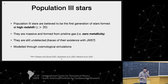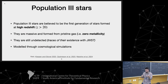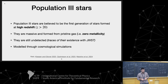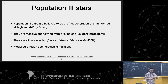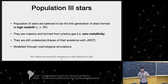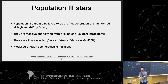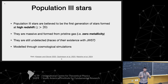Let's see an example and look at how we can use SEVN to model black holes from population three stars. Population three stars are believed to be the first generation of stars ever formed at high redshift — the first star formation at redshift above 20. They are massive and formed from pristine gas. In the case of population three stars, we set metallicity equal to zero. They are still undetected.